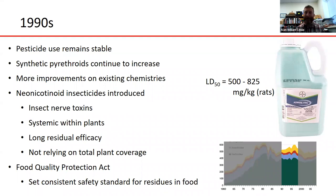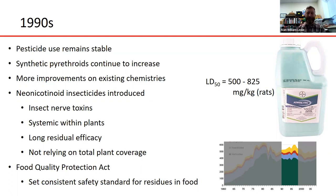These neonicotinoids are unique because they're systemic within plants. Most pesticides require coverage of the entire plant to expose the pest to the chemical, but with neonicotinoids, the plant takes the chemical up through leaves, roots, or trunk and stores it inside the plant tissue. As insects feed on the plant they get exposed to it. This provides longer efficacy since the chemical isn't on the plant surface, isn't exposed to UV radiation, won't wash off, and doesn't require total plant coverage — allowing application as soil drenches and seed treatments, reducing spray drift and non-target effects.